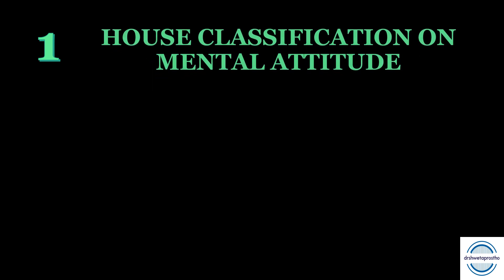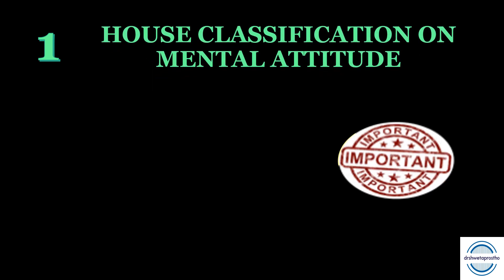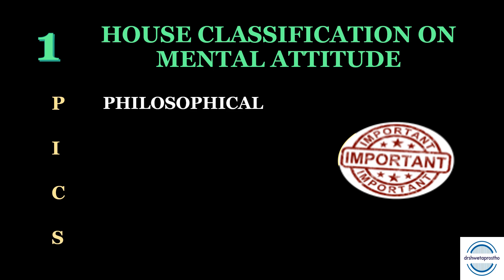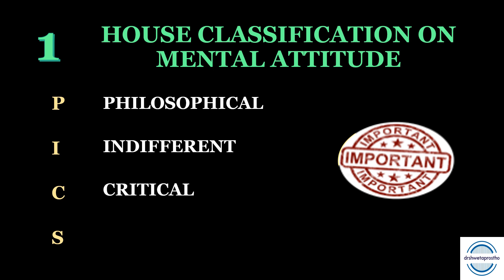The first mnemonic is for the House classification on mental attitude — it is an important topic asked in theory exams as well as in the viva and chair-side viva. The mnemonic is PICS, a word we often use as a short form for pictures. The four types of patients depending on mental attitude are: P for philosophical, I for indifferent, C for critical, and S for skeptical.